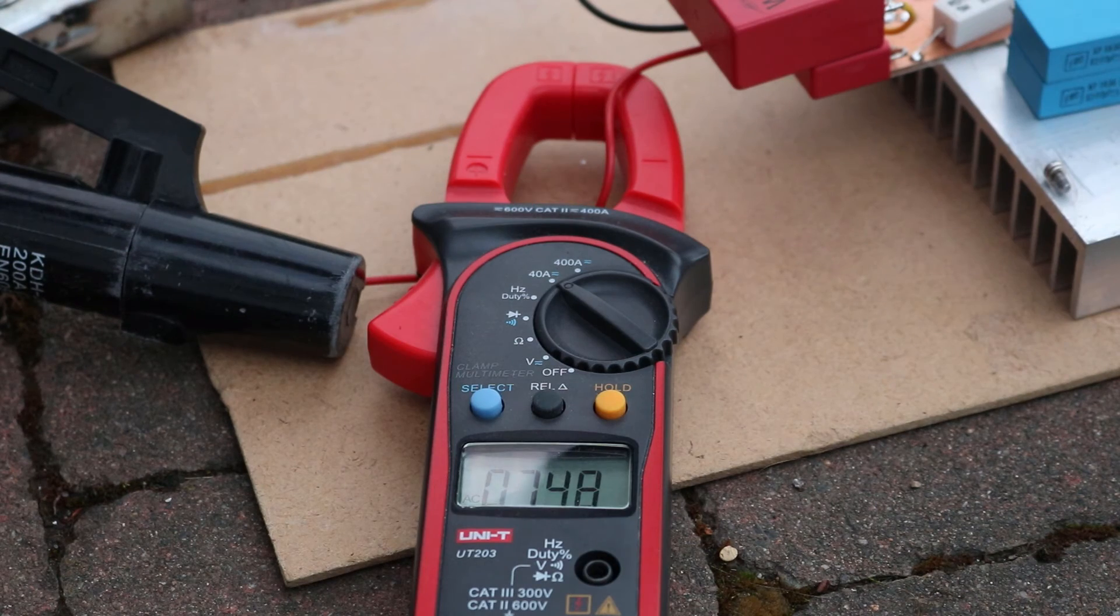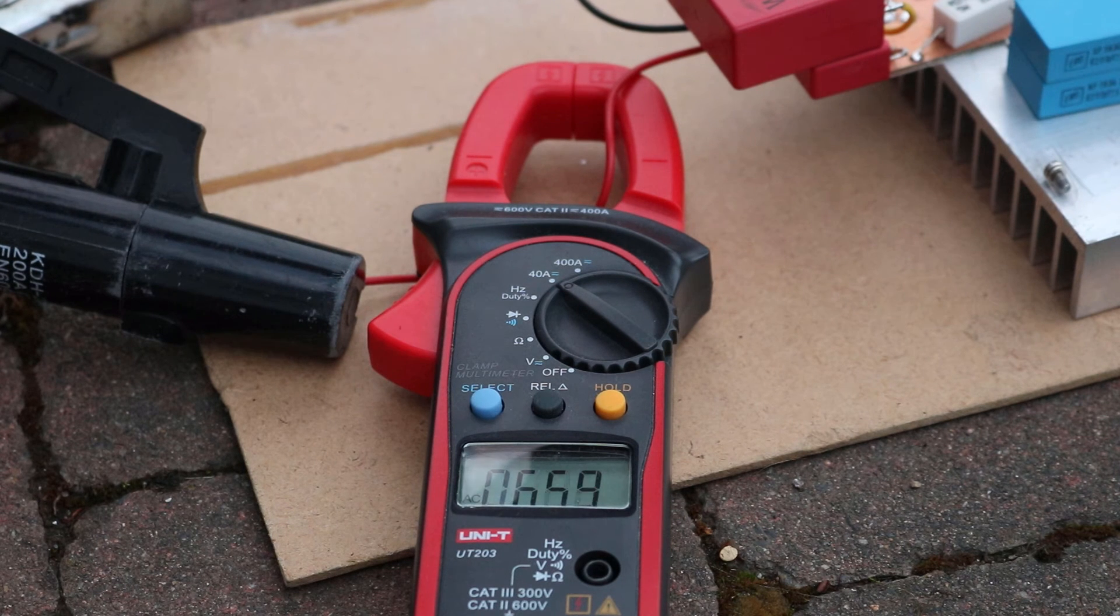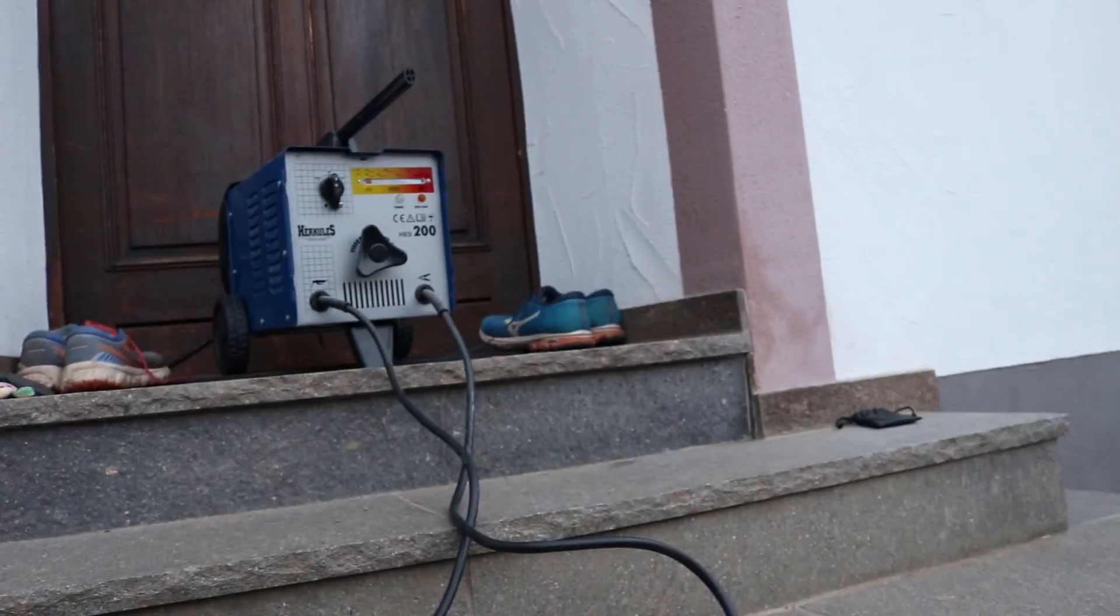At 31V DC it should draw a current of 10A and at 48V 7A. To have the AC voltage I actually used a welder. It has only 40V but that's what I had on hand.